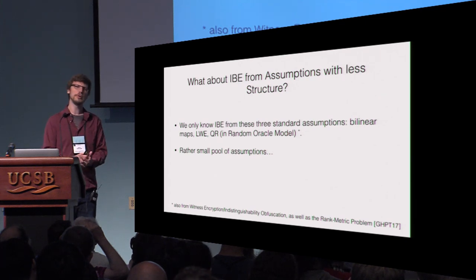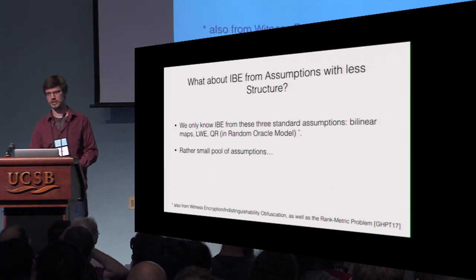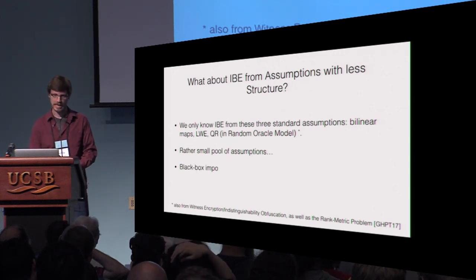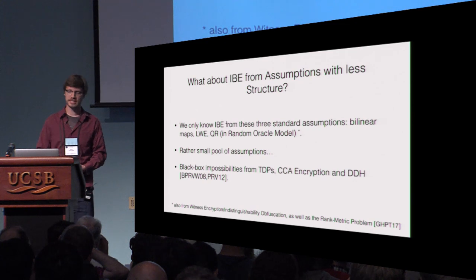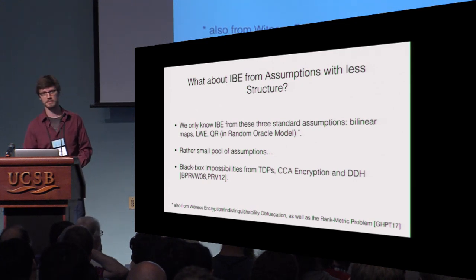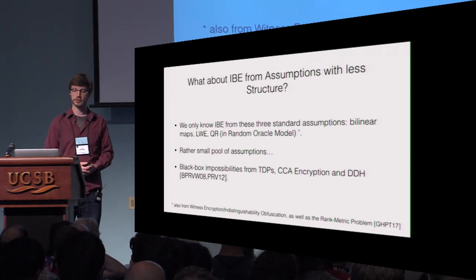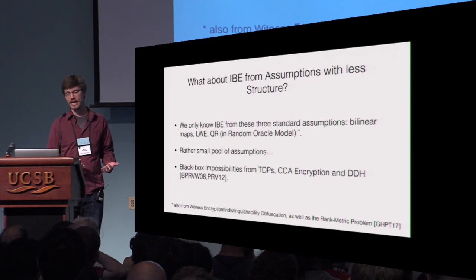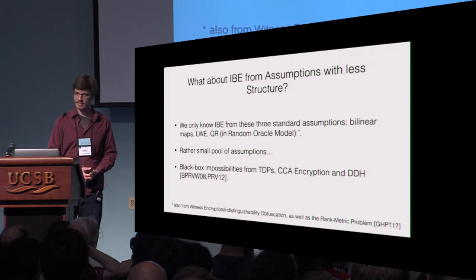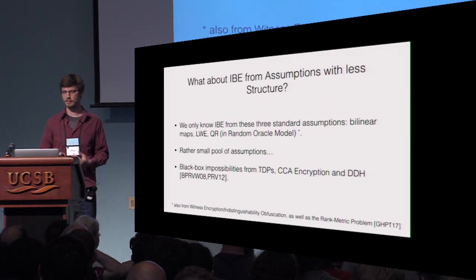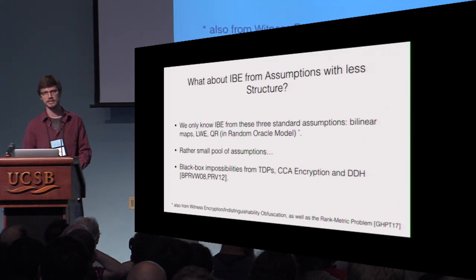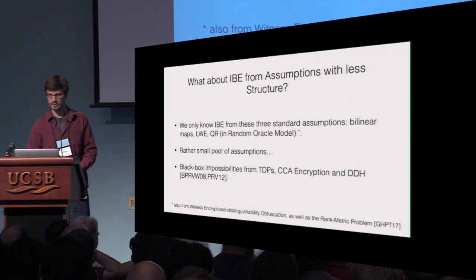So there is somewhat of a perceived gap between the notion of IBE and public key encryption. Furthermore, we know that black-box techniques will not suffice to build identity-based encryption from trapdoor permutations, CCA encryption, or the decisional Diffie-Hellman assumption, reinforcing this perceived gap between identity-based encryption and public key encryption.